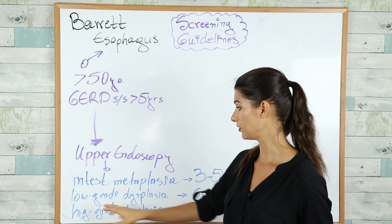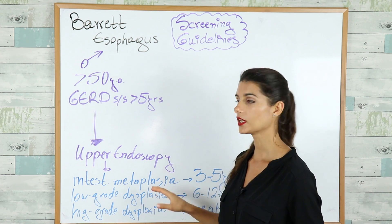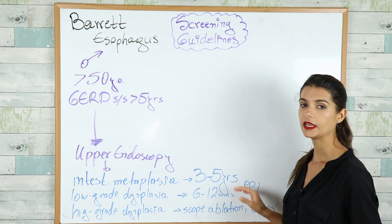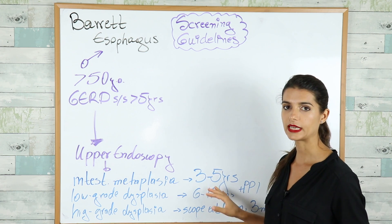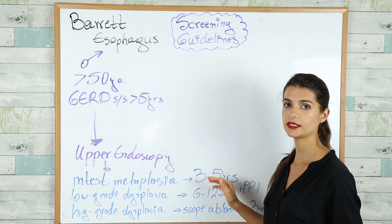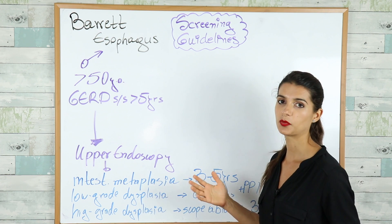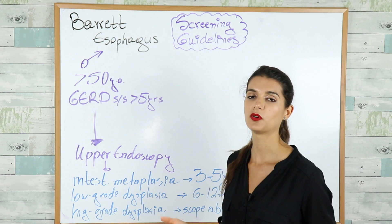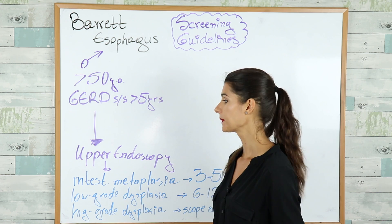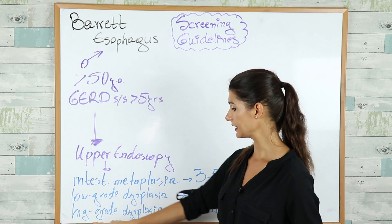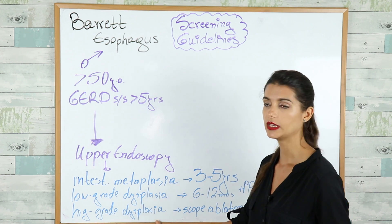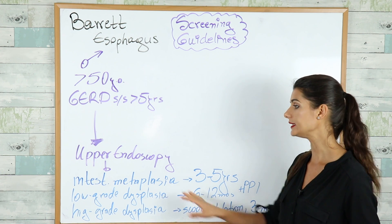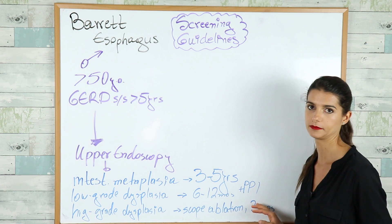If we find low-grade dysplasia, we have to repeat the upper endoscopy in 6 to 12 months. In both cases we have to add PPIs — proton pump inhibitors like omeprazole and lansoprazole. If we find high-grade dysplasia, we have to scope and ablate the patient, and repeat the upper endoscopy in 3 months.